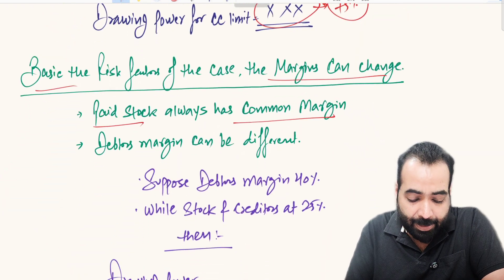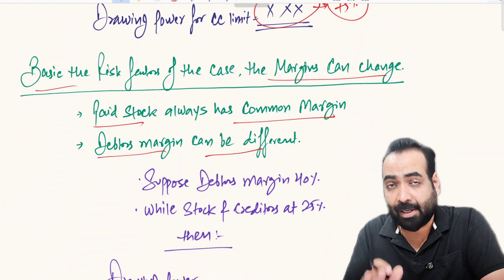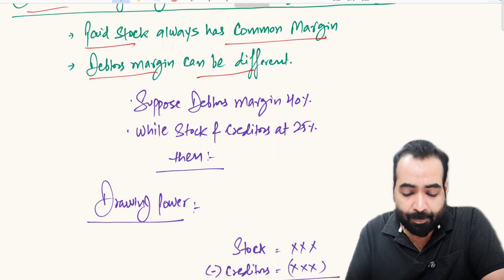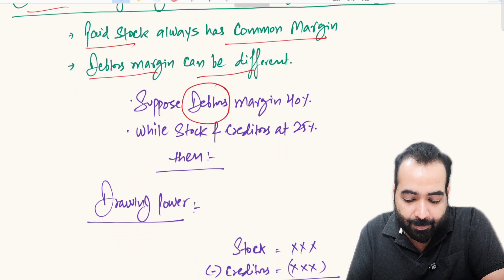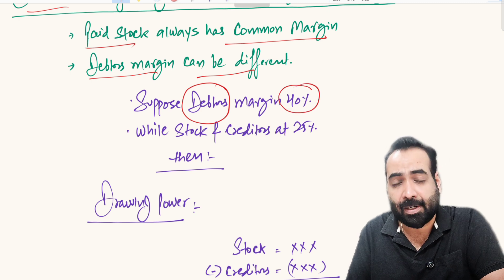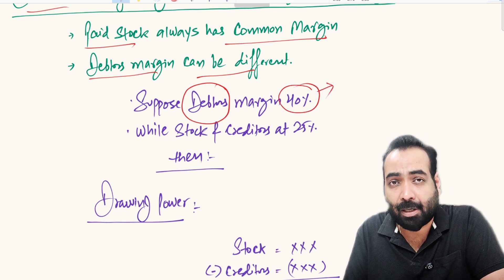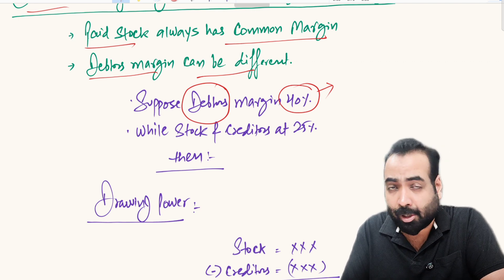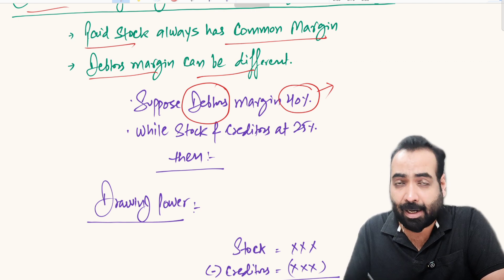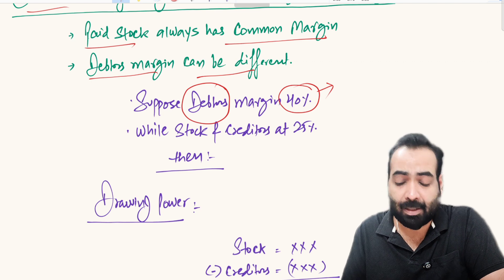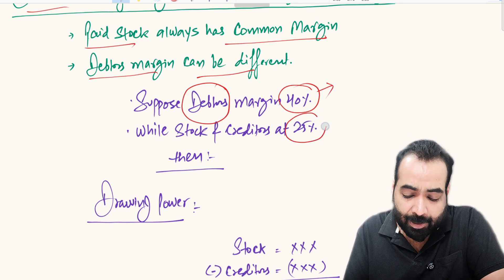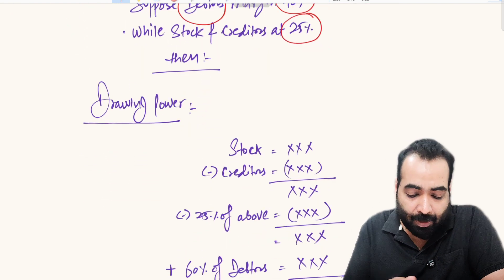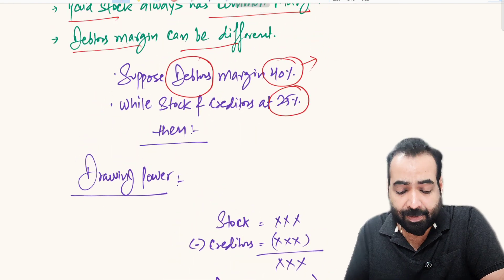Let's take an example where the promoter margin on debtors is 40 percent. The bank is saying: on the amount invested in debtors, you need to contribute 40 percent as your margin and 60 percent will be given as drawing power by the bank. For stock and creditors, the margin is 25 percent. How will drawing power be calculated in such a scenario?